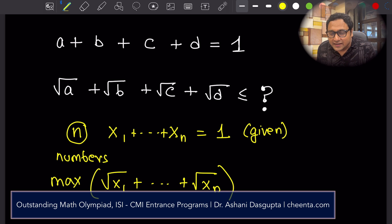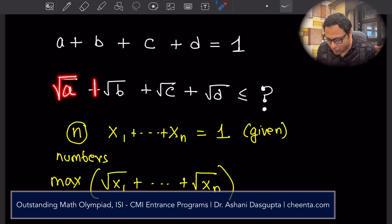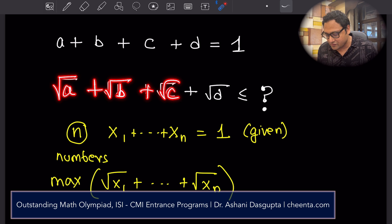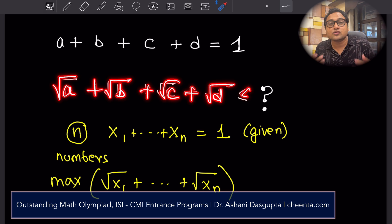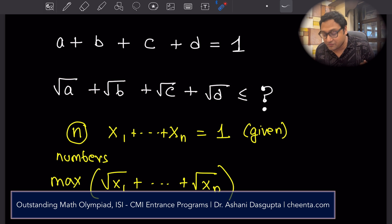In the particular case, so that it's easier for our brain to process, find the maximum possible value of square root of a plus square root of b plus square root of c plus square root of d. What is the maximum value of this sum? How do we approach this problem?